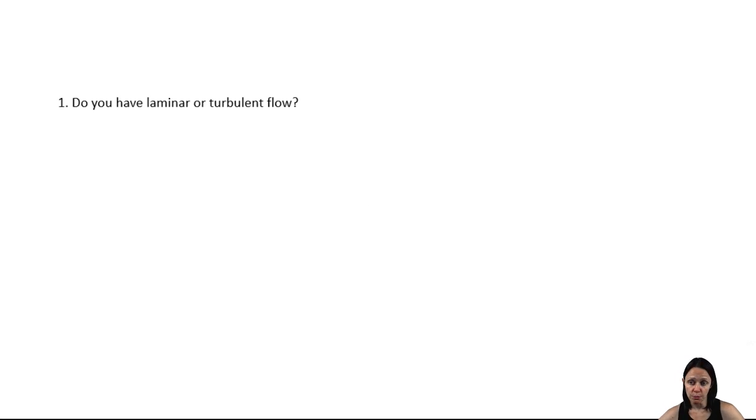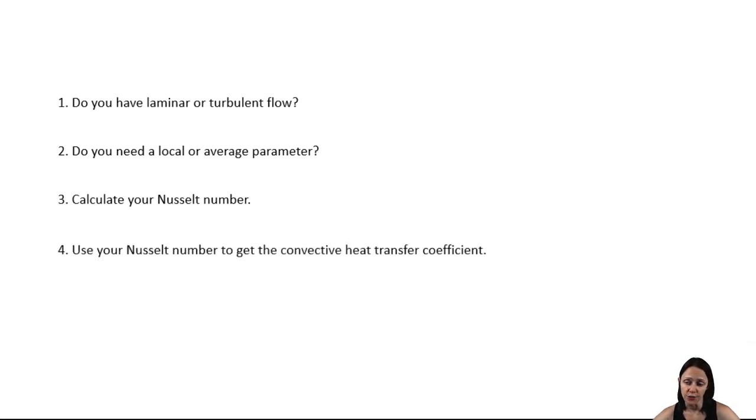When you're solving convection problems, you need to get your Reynolds number. See if that critical Reynolds number of 500,000 has been reached at the location that you're interested in. Next, figure out if you need an average value or a local value. Presumably, you'll be after your H value. So you need to get your Nusselt number. And then from there, you can calculate your H value. Well, I hope that was helpful. Thank you for watching. Let me know if you have any questions.